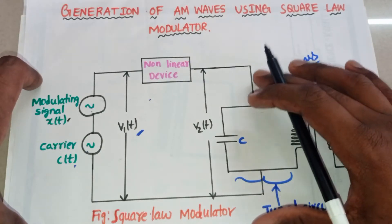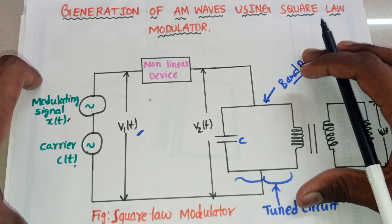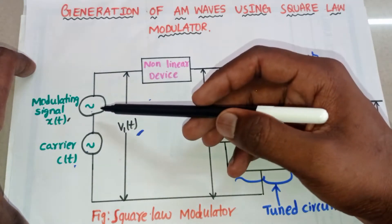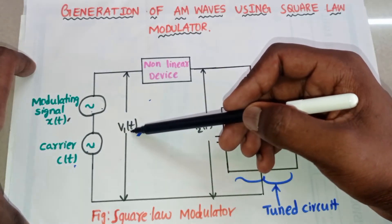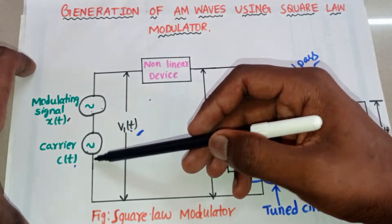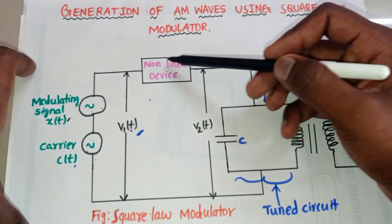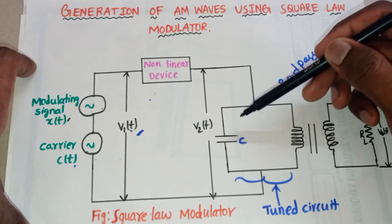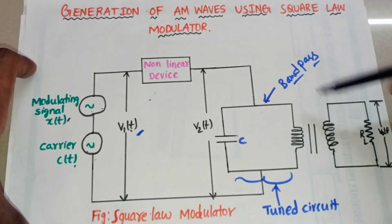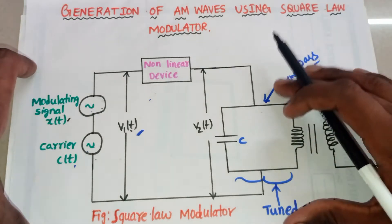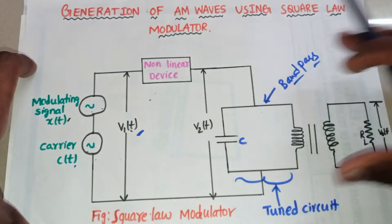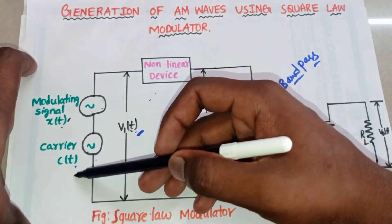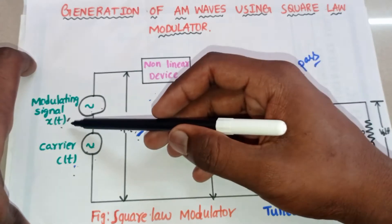Let's see how the square law modulator works and how it generates AM waves. The message signal and carrier signal are connected in series. V1(t) is the combination of both message signal and carrier signal. So V1(t) = X(t) + C(t). This is equation number 1, and this combined signal is applied to the non-linear device.